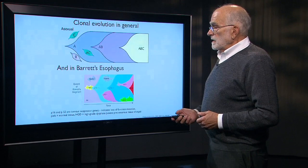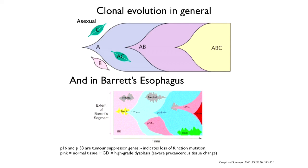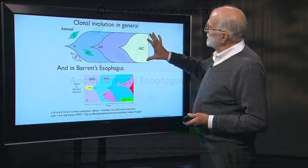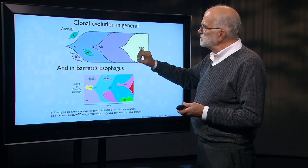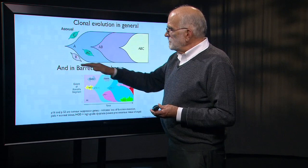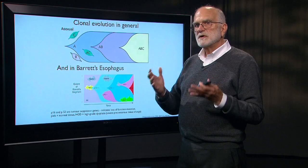In general, clonal evolution looks something like this. The vertical axis is frequency — when a color completely occupies the space it's 100%, and when it's just a small point it's 0%. This picture was actually developed not for cancer, but just to represent clonal evolution. The idea was that the superior combination would be particular mutations in three different genes, A, B, and C.